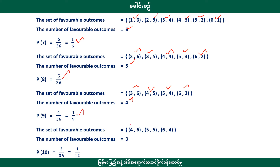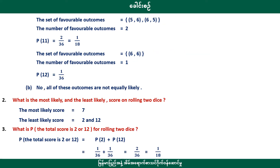Probability of 10 is 3 by 36: combinations 4+6, 5+5, 6+4. Probability of 11 is 2 by 36, or 1 by 18. Probability of 12 is 1 by 36.